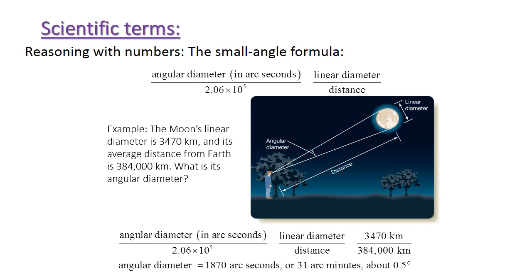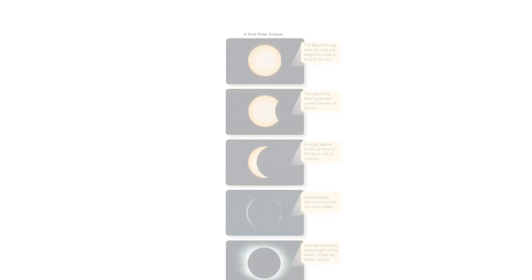As an example: the moon's linear diameter is 3,470 km and its average distance from Earth is 384,000 km. What is its angular diameter? Substituting into the formula — angular diameter (arc seconds) over 2.06 × 10⁵ equals 3,470 km over 384,000 km — we get an angular diameter of approximately 1,870 arc seconds, or 31 arc minutes, which is about 0.5 degrees.